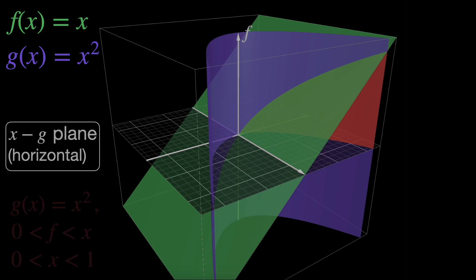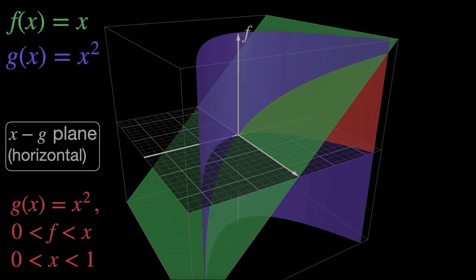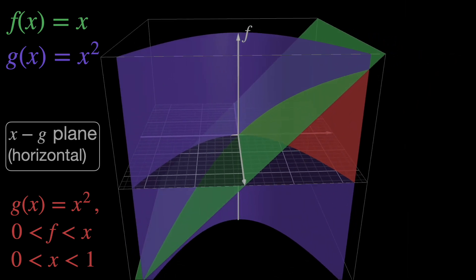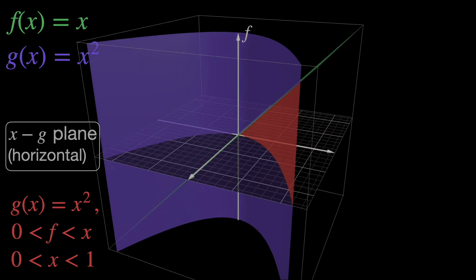We're going to paint a piece of one of these surfaces in orange. This is just a function g of x, but restricted by the conditions 0 < f < x and 0 < x < 1. In this case, the first interval is kind of meaningless, because f of x equals x, but it's okay. This interval will make more sense in the next examples.